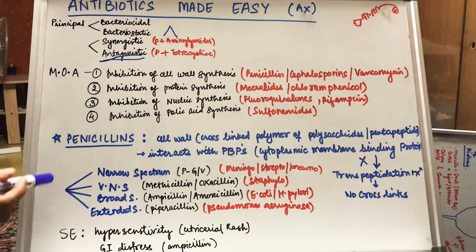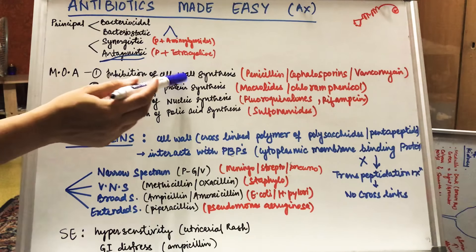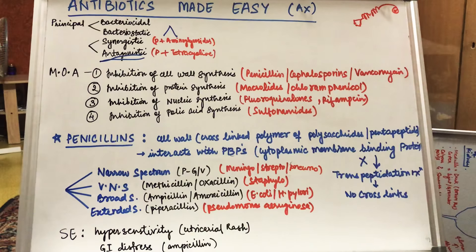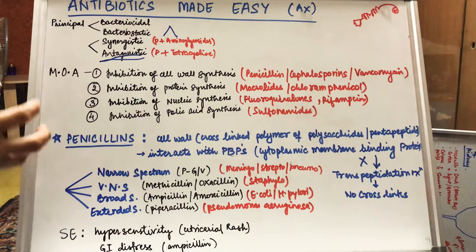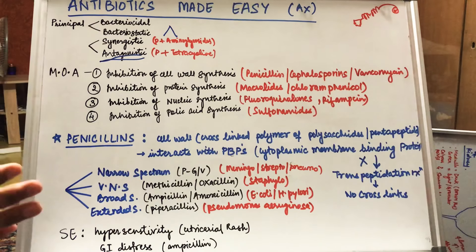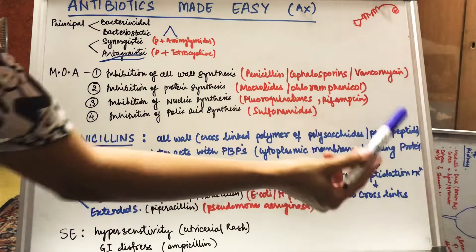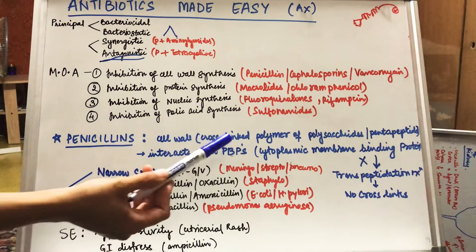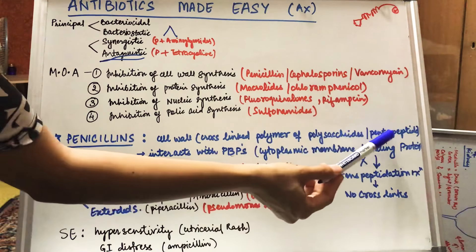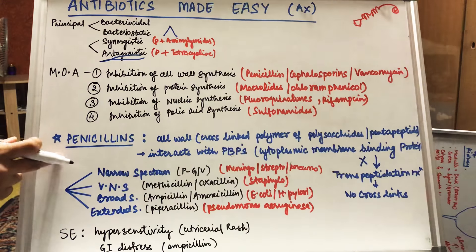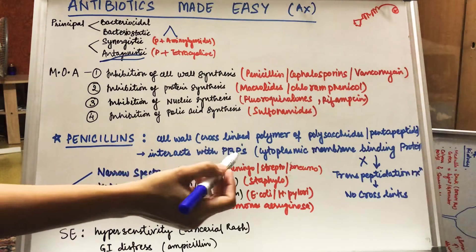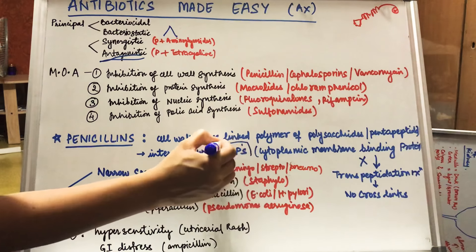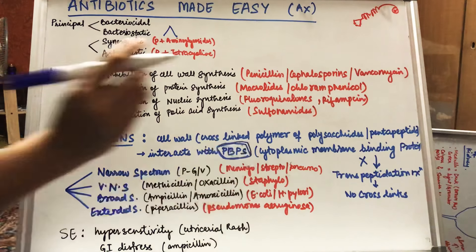Let's talk about penicillin for now. Penicillin works by inhibiting cell wall synthesis. Let's remind you about the biochemistry. Cell wall is composed of cross-linked polymers of polysaccharides and pentapeptides. So cell wall is made up of polysaccharides and pentapeptides. This drug interacts with PBPs.